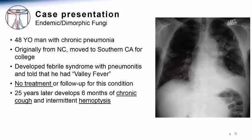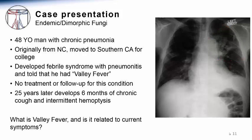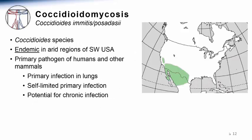On chest x-ray, as seen in the right-hand panel of this slide, there was an infiltrate in the left upper lung concerning for chronic pneumonia. The question about this case is what is Valley Fever and how is it related to the patient's current symptoms so many years after his first infection?